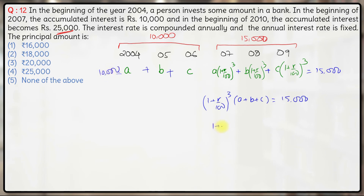So effectively we have (1 + r/100)³ = 1.5. That is what we have established so far.